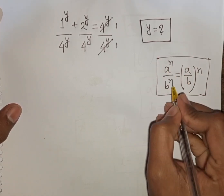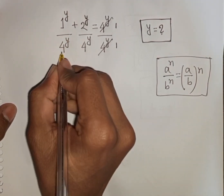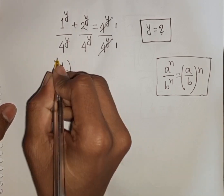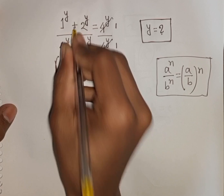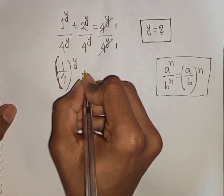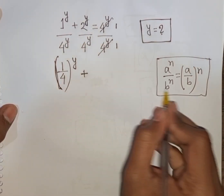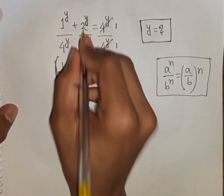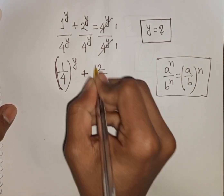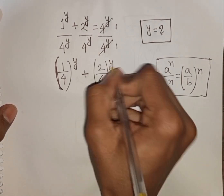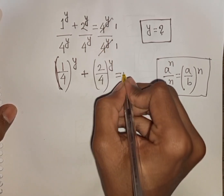That means when we have the same power but different bases, according to this formula we can write (1 over 4) power y plus (2 over 4) power y is equal to 1 divided by 1, that means it will be 1.